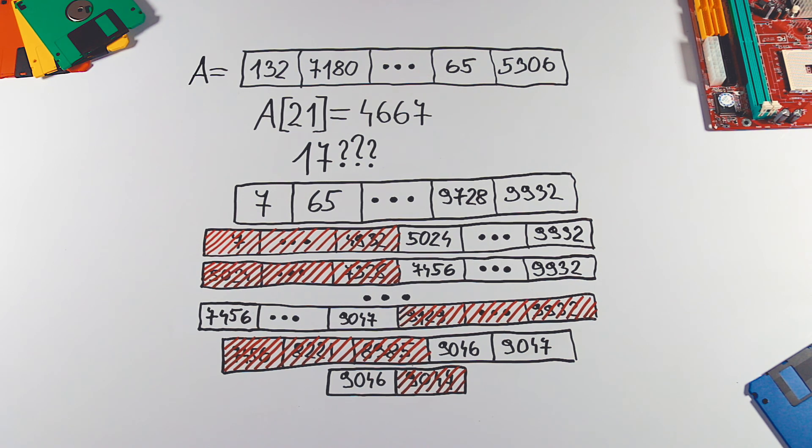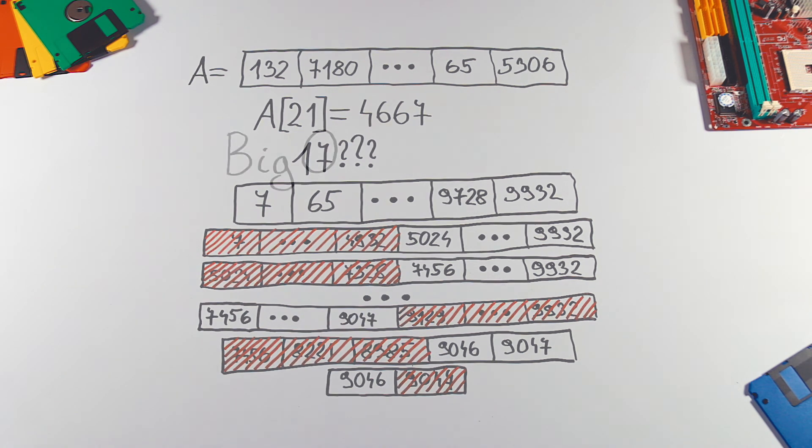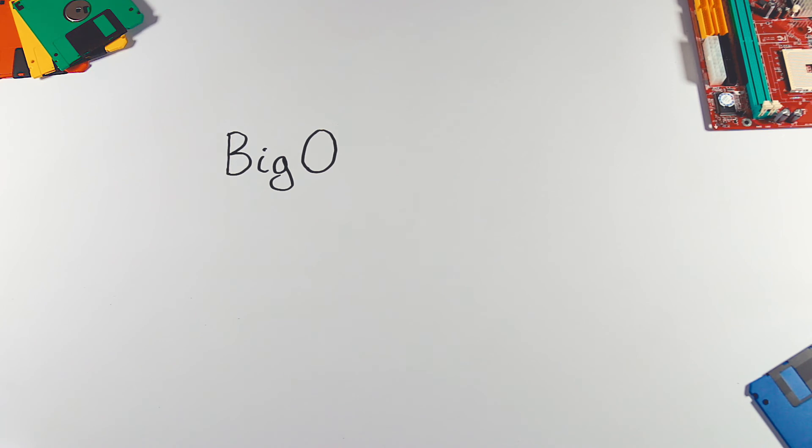Big O notation assumes the worst possible scenario. This guarantees that the algorithm will never take more space or time above that limit.